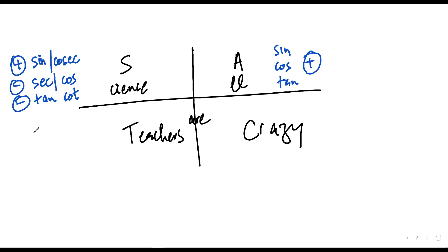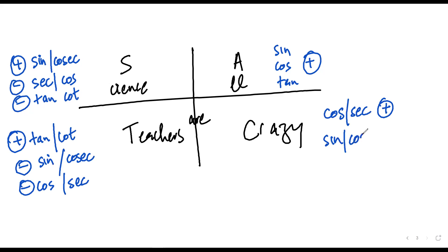In the third quadrant, only tan and his brother cot are positive; sin, cosecant, cos, secant are negative. In the fourth quadrant (crazy), cos and secant are positive; sin, cosecant, tan, cot are negative.